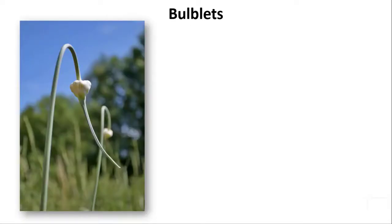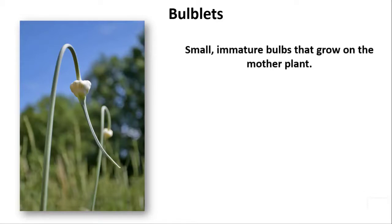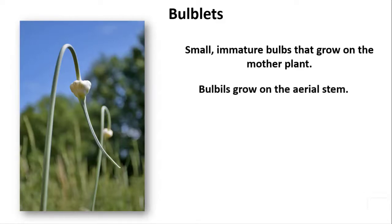Bulblets. Bulblets are small, immature bulbs that grow on the mother plant. They may develop on the aerial stem. Bulblets that develop on the aerial stem are called bulbels.